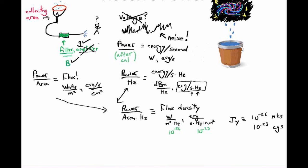A Jansky is 10 to the minus 26 watts per meter squared per hertz in units of meters, kilograms, seconds — or 10 to the minus 23 in CGS units, which are ergs per second per hertz per centimeter squared. So when you hear people talking about Janskys, they're talking about flux density. Janskys are the first unit that most people with a radio telescope can agree on.